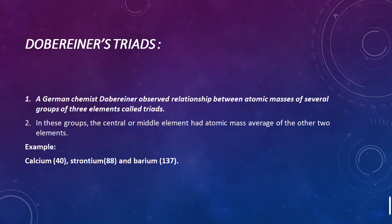Let's start with Döbereiner's Triads, presented by a German chemist Döbereiner. He observed a relationship between the atomic masses of groups of three elements, which he called triads. The central or middle atom of each triad holds the average atomic mass of the other two elements. So if we take the first and third elements, we can calculate the average to get the atomic mass of the second element.